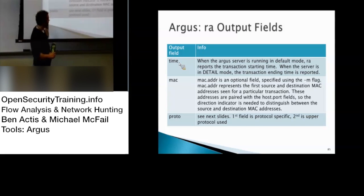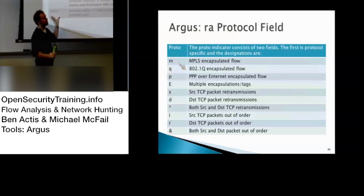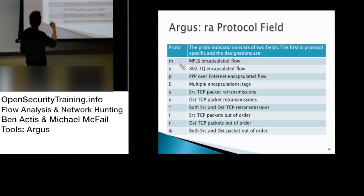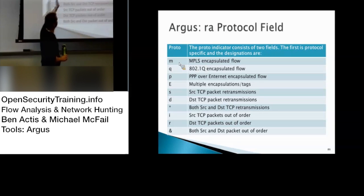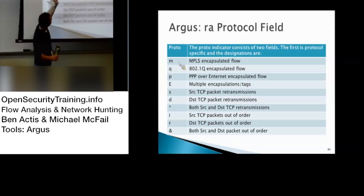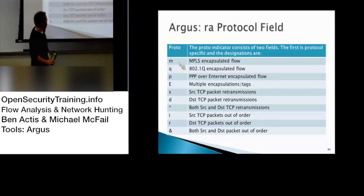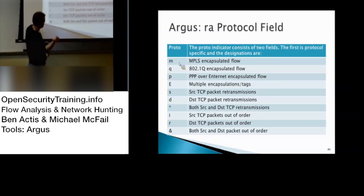They do protocols differently and it's a bit weird. M is MPLS encapsulation flow. You have other encapsulated ones and multiple encapsulations. For source TCP packet retransmissions you'll see S; destination is D. If both sides get a retransmission you'll see a star. If it's out of order you'll see I; if the other way is out of order you'll see R; and if they're both out of order you'll see an ampersand.